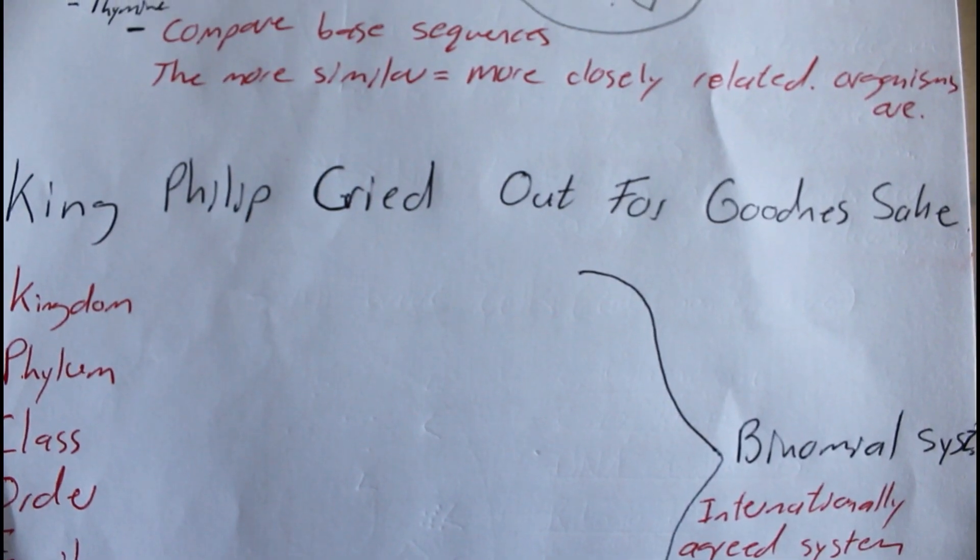So how do you classify things in biology? It is according to the binomial system — an international system that all scientists use for classification. It's a complex classification scheme using Latin names to name organisms. The system consists of kingdom, phylum, class, order, family, genus, and species. A mnemonic you can use is: King Philip cried out for goodness sake.